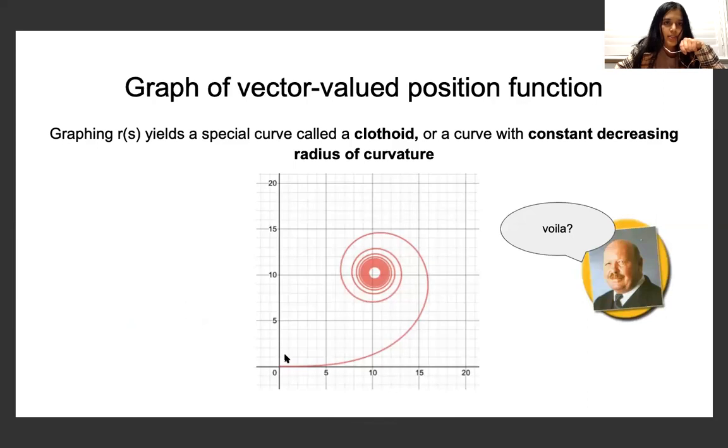So graphing r(S) yields a special curve called a clothoid or a curve with constant decreasing radius of curvature. Which is incidentally what Schwarzkopf wanted to find when he was building his roller coaster loop.